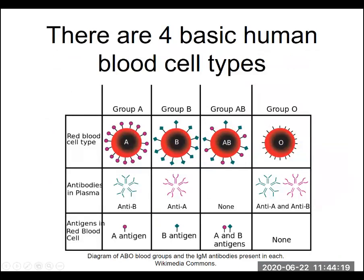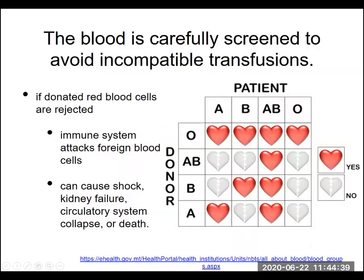Type O blood is a universal donor because it won't be recognized as foreign in patients with type A, B, or AB blood. A patient with AB blood is referred to as a universal recipient — they don't have any of these antibodies, so they won't attack type A, B, or O blood. If you mismatch a donor and recipient where blood types are incompatible, the patient's antibodies will attack the blood, causing very harmful problems: disruption of the circulatory system, clot formation, kidney failure, and in severe cases, death.